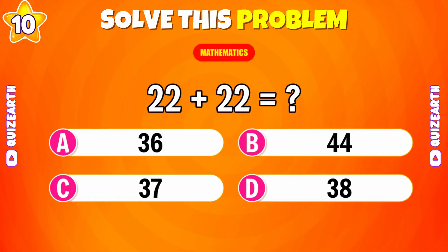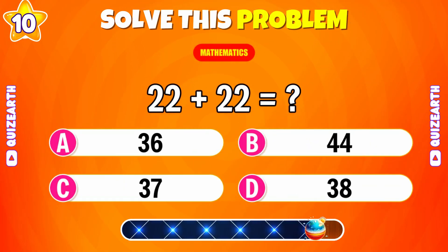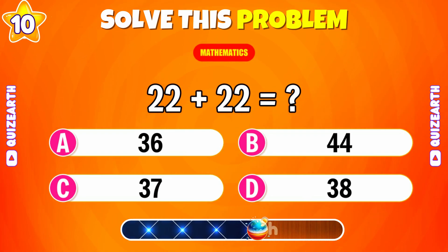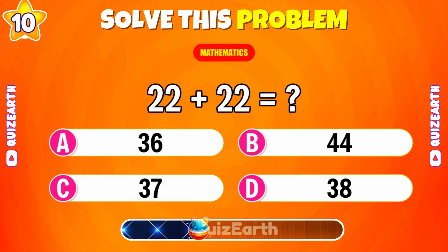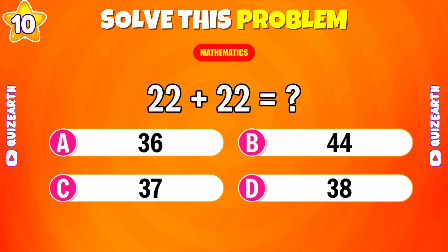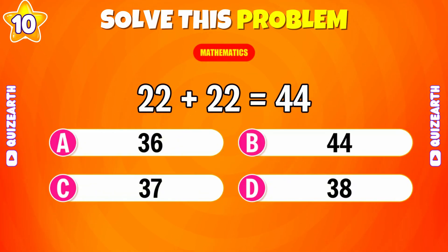Halfway there! Try this. Twenty-two plus twenty-two? Excellent. It's forty-four.